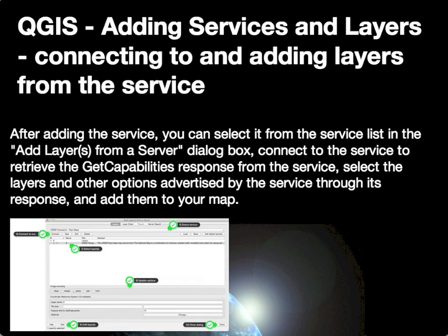With your layers selected, you can also update additional options such as specific image formats you would like to request, based on the advertised formats from the service. You can also potentially change the coordinate reference system to one of the available supported coordinate reference systems for that particular service. Once you are satisfied with your choices, click the Add button in the lower left corner of the dialog to add the layers to your map. When done adding layers, hit the Close button to close the layer addition dialog.